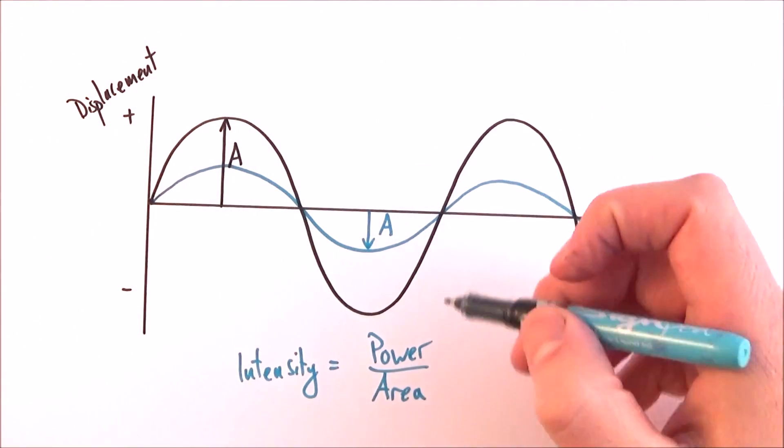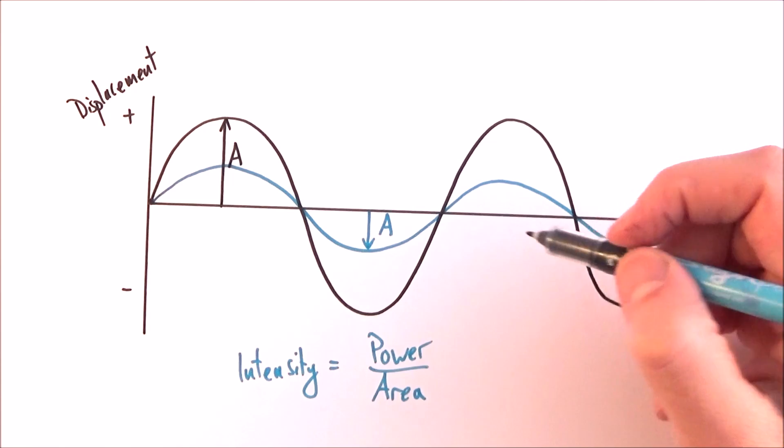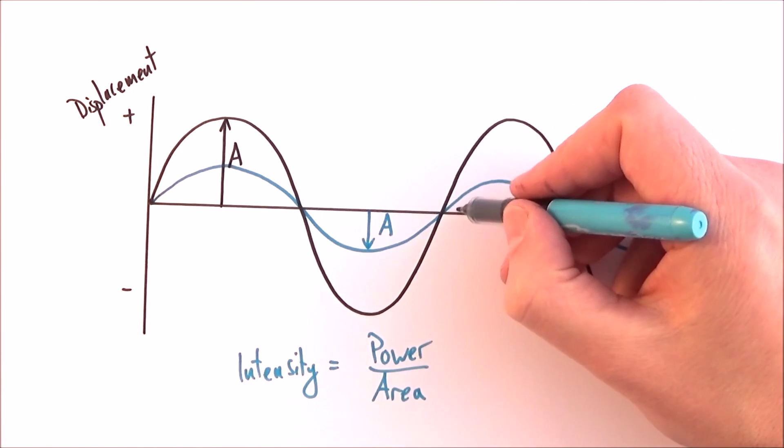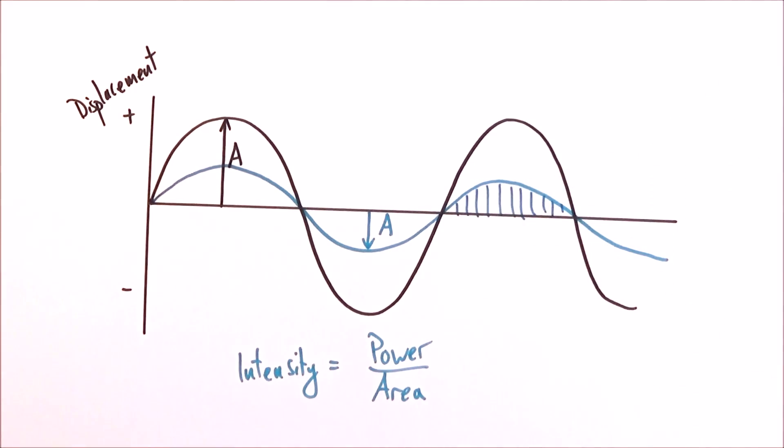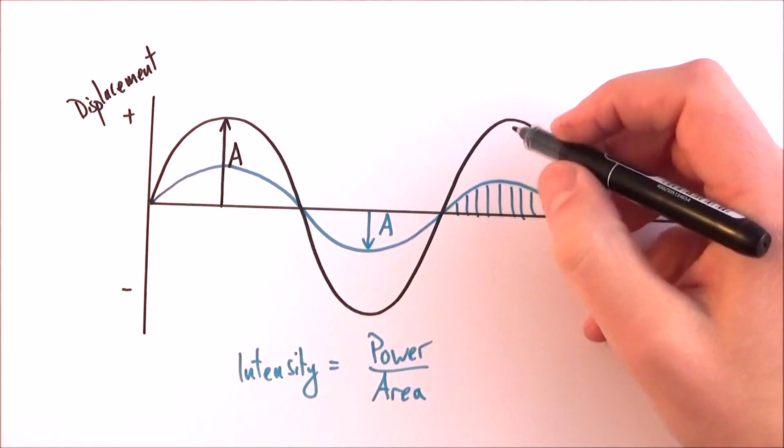And actually what we find is that the intensity isn't proportional just to the amplitude. We can look at maybe the difference in the area under the wave here, for the small blue one, and if we compare that area to the whole thing.